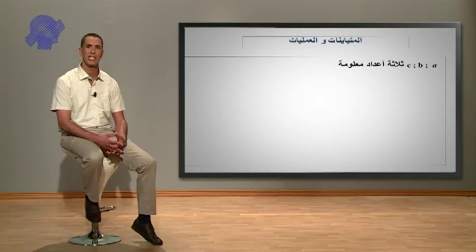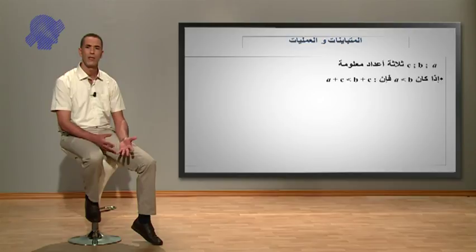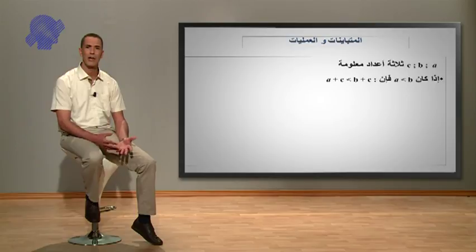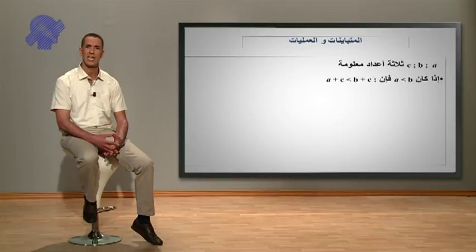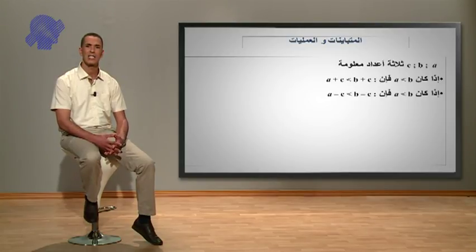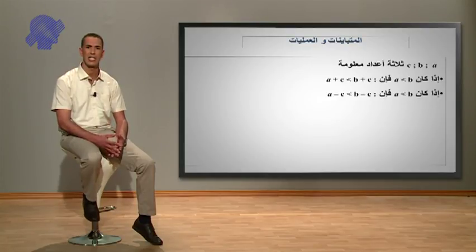لتكن A و B و C أعداد معلومة. إذا كان A أصغر من B، فإن A زائد C أصغر من B زائد C. بإضافة العدد C إلى طرفي المتباينة تبقى دائما المتباينة صحيحة. إذا كان A أصغر من B فإن A ناقص C أصغر من B ناقص C.